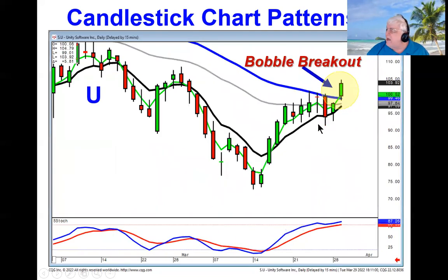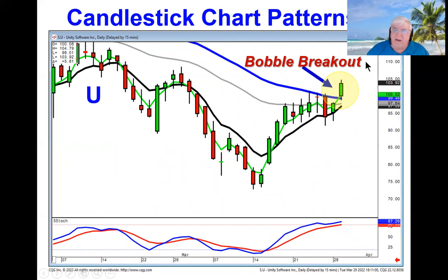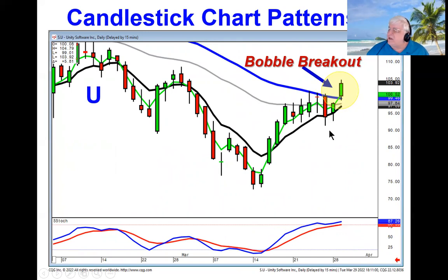So anytime we see that pattern set up — where they came up, failed, came back to our T-line, and then come back up through this level — the probabilities are extremely strong that Wave 3 is in progress.